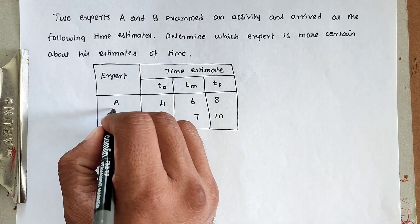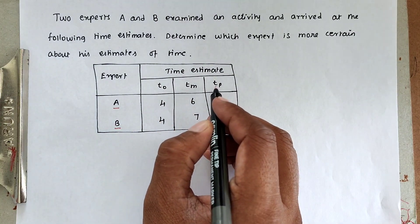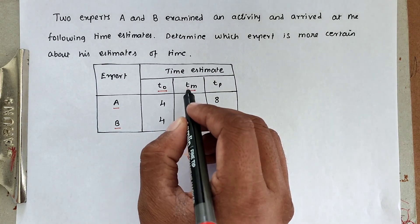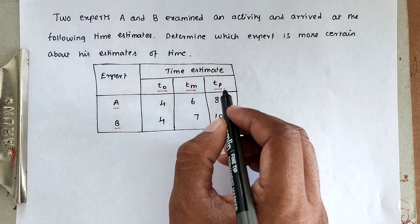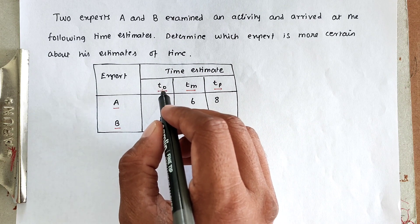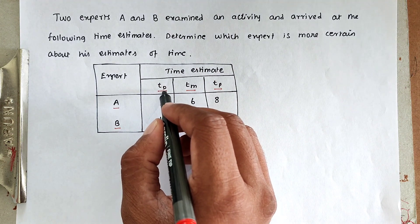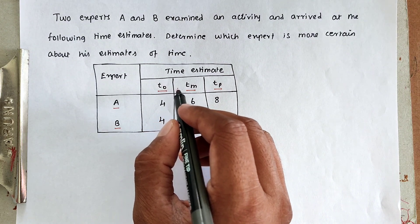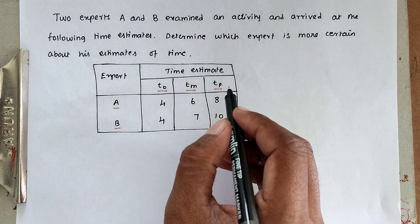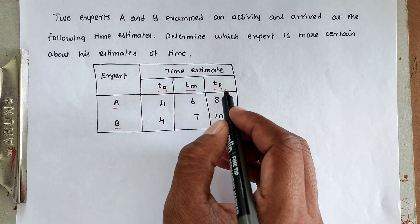Expert A and Expert B are given with values for TO, TM, and TP. TO is optimistic time, TM is the most likely time, and TP is pessimistic time. Whenever the planned activity goes very well, that time estimate is called optimistic time. Whenever the activity planning collapses, that time estimate is called TP, the pessimistic time.